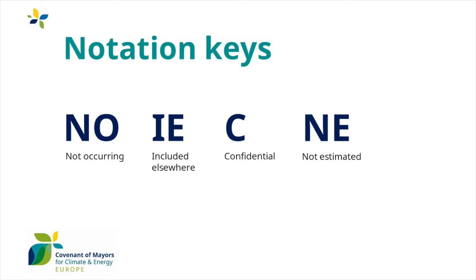There are four notation keys proposed. The first one is NO — not occurring. This notation key can be used when an activity or process does not occur or exist within the city, or for its significant sources. The second notation key, IE — included elsewhere — can be used when greenhouse gas emissions for activities are estimated or represented in another category of emission inventory, or are covered by a dedicated reporting system.